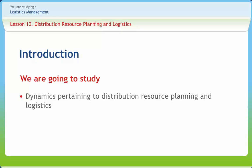Distribution Resource Planning, or DRP as we are going to call it, is a widely used and potentially powerful technique for helping outbound logistics systems manage and minimize inbound inventories. In this lesson, we will study about dynamics pertaining to Distribution Resource Planning and Logistics.